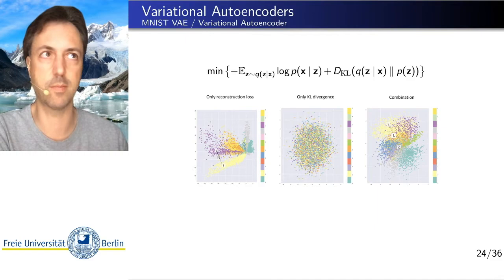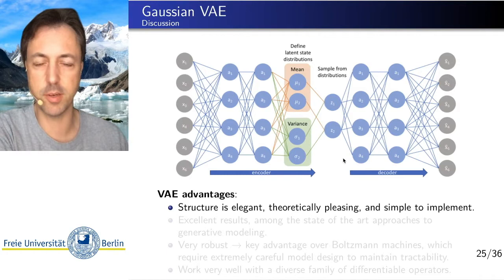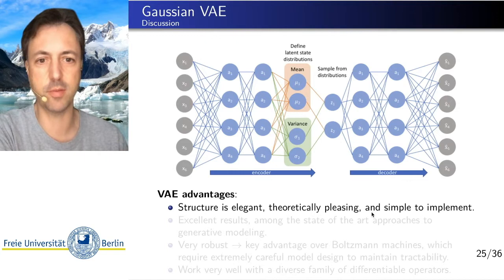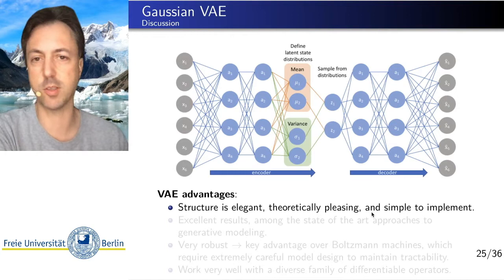So let's discuss the variational autoencoder, especially Gaussian variational autoencoder. So it's an elegant structure. It's theoretically pleasing because it arises from this theory of variational inference. And it's also very simple to implement, very straightforward. And this is also a reason why these variational autoencoders are extremely popular.